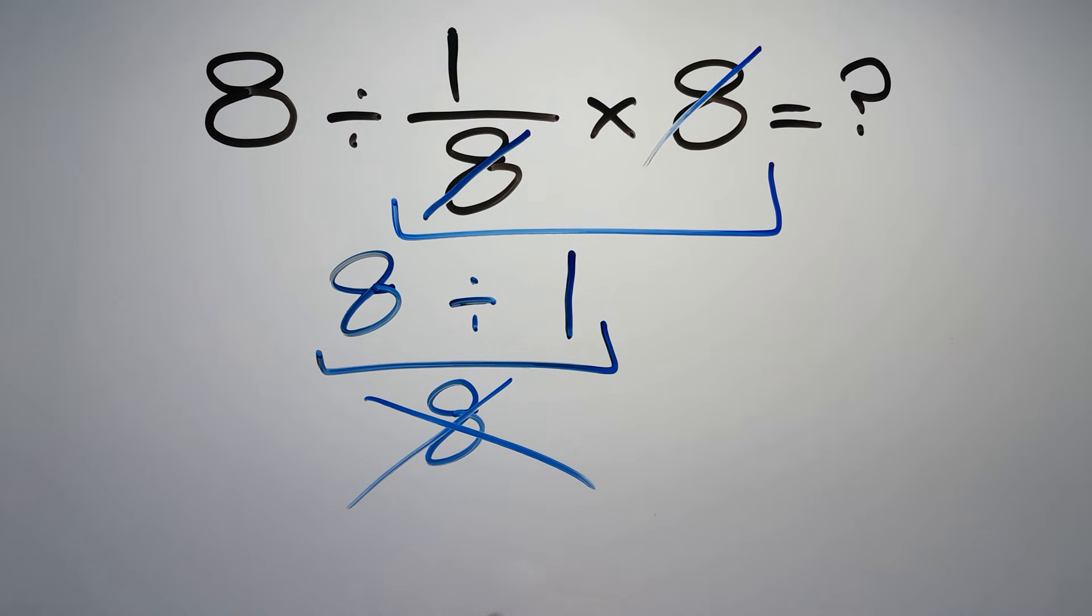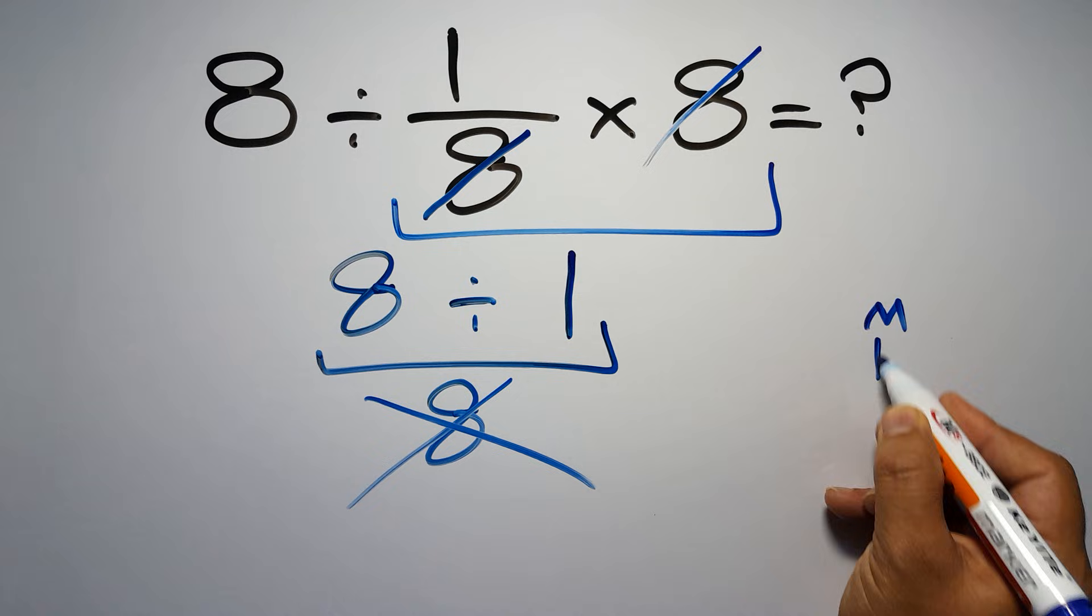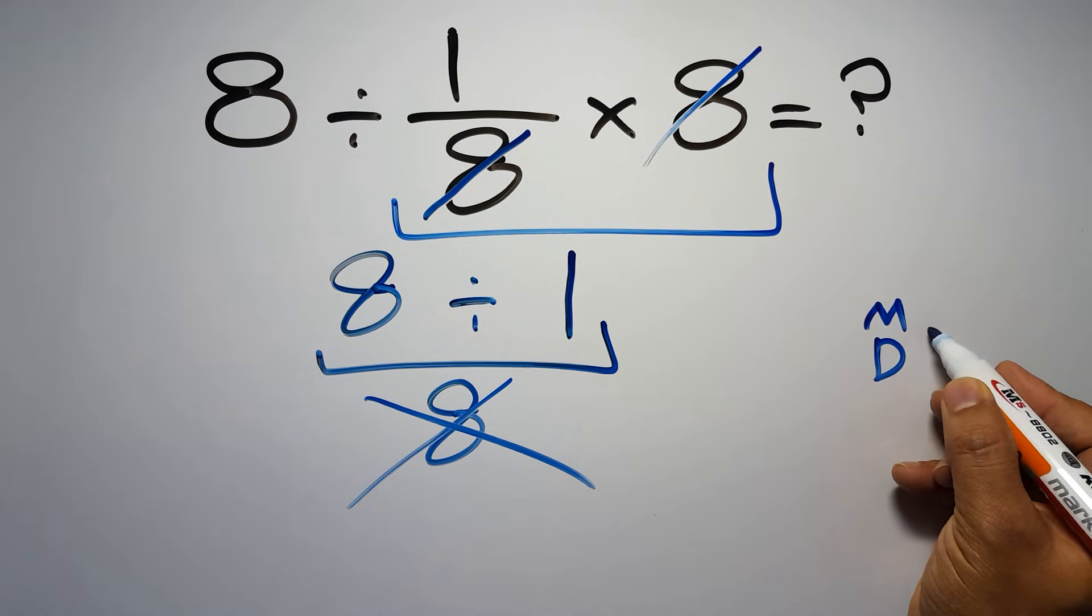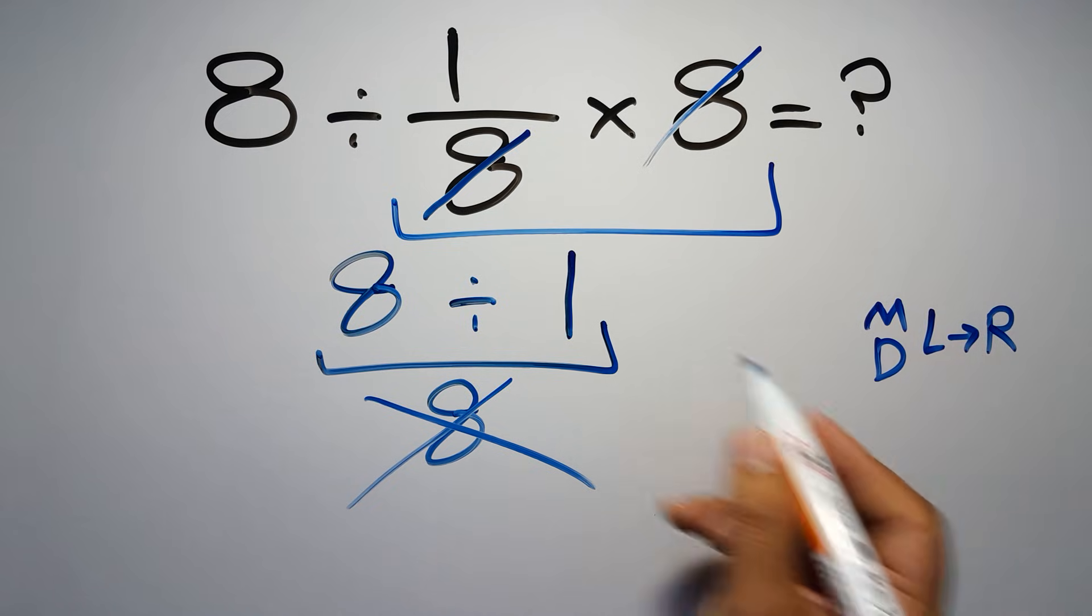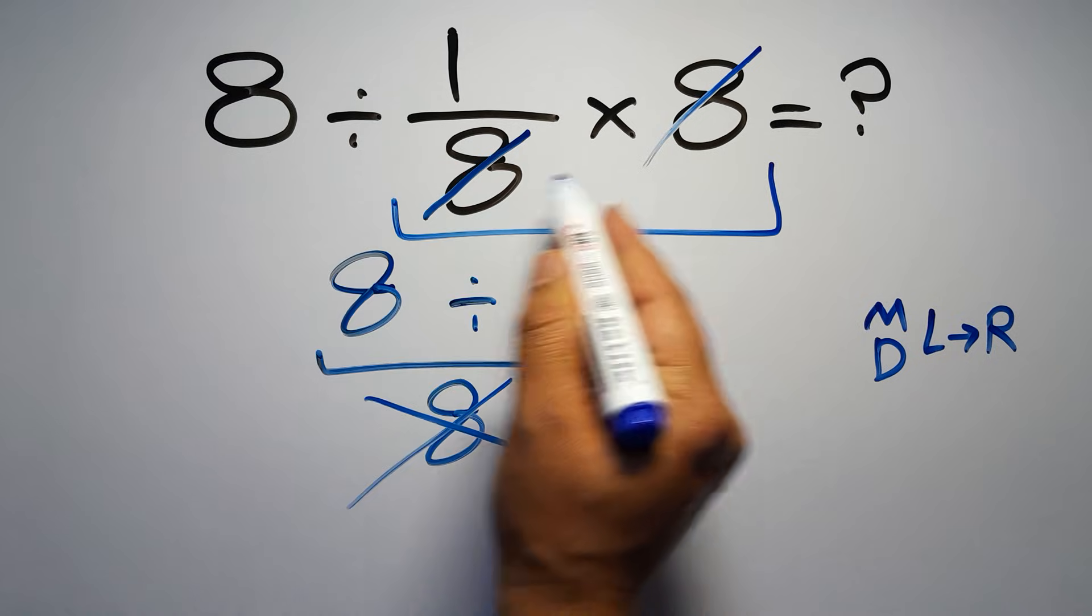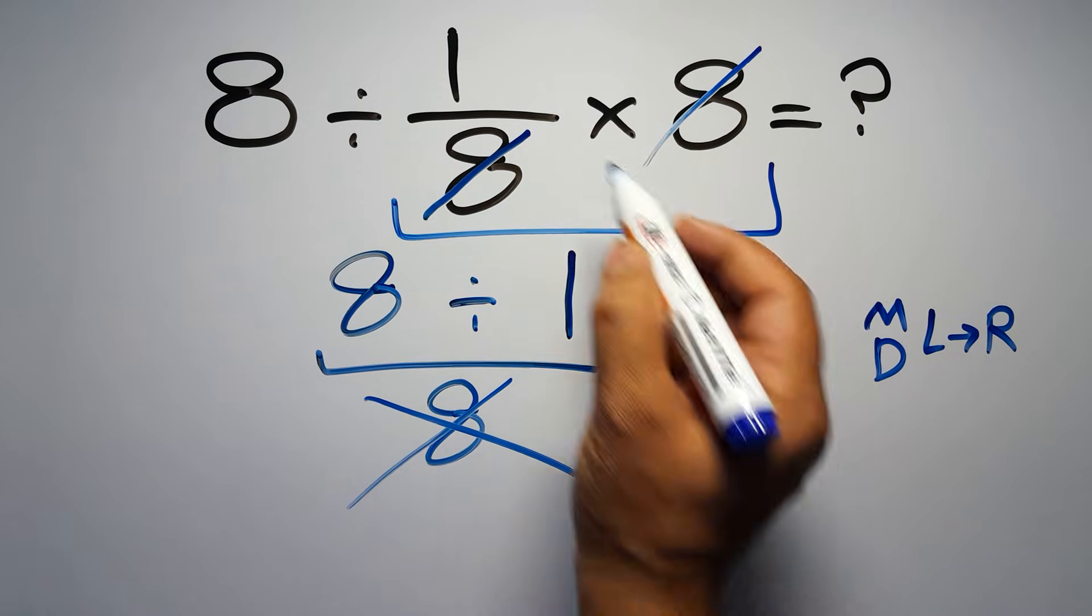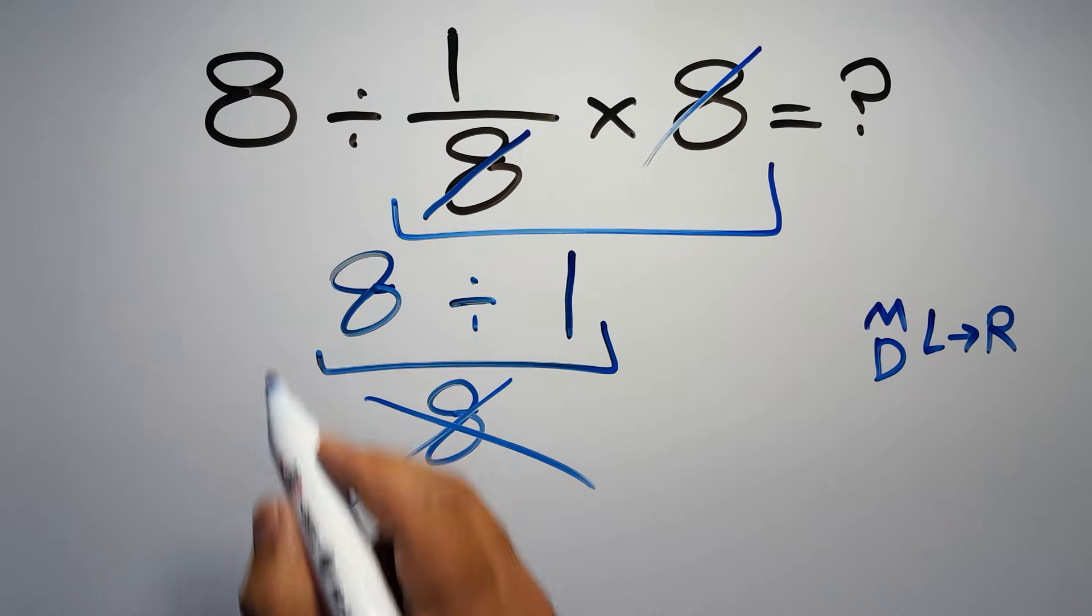according to the order of operations, multiplication and division have equal priority, and we have to work from left to right. So here, first we have to do this division, then this multiplication. If we do this multiplication before this division, it is wrong.